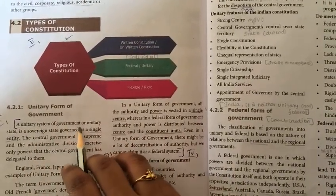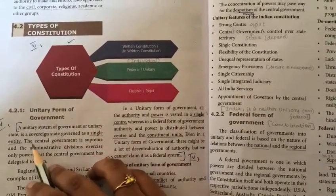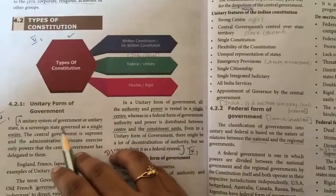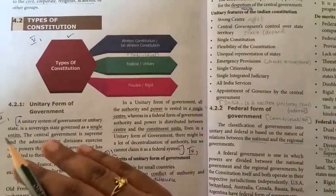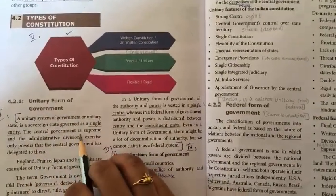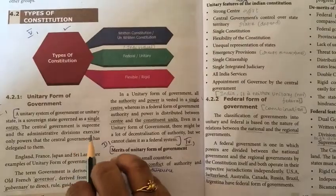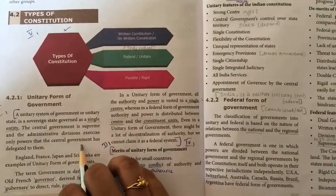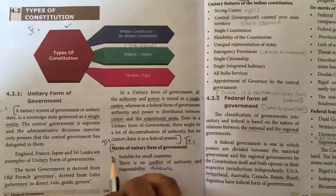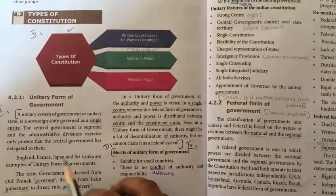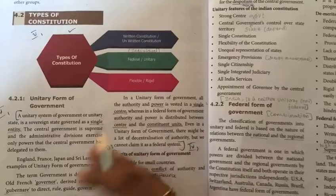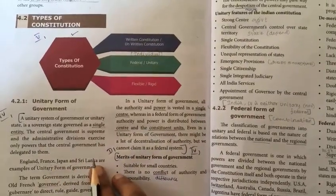A unitary system of government or unitary state is a sovereign state governed as a single entity. The powers are under a single entity — that is known as a unitary form of government. The central government is supreme, and the administrative divisions exercise only powers that the central government has delegated to them. England, France, Japan, and Sri Lanka are examples of unitary form of government.